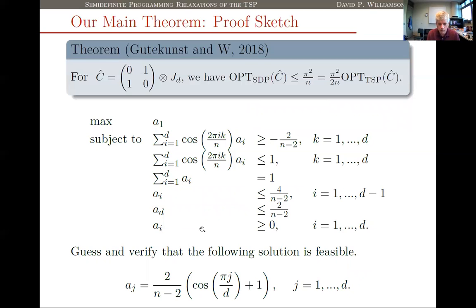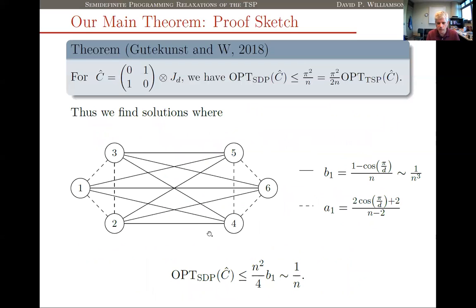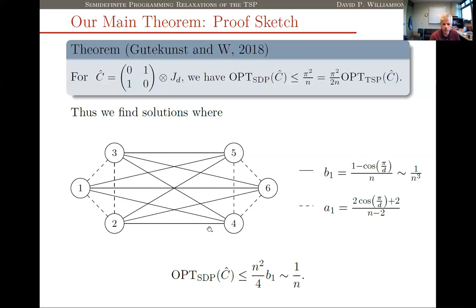Once you have those LP values, you find that a_1 equals a certain expression and b_1 equals (1 − cos(π/d)) / n, where d = ⌊n/2⌋, which is something like 1/n³. Recall we showed the SDP objective value is roughly (n²/4) · b_1. If b_1 is something like 1/n³, that gives us an SDP optimum value of something like 1/n. So what we've established is exactly what we set out to prove: the value of the SDP falls off like 1/n as n grows larger, while the value of the optimal tour is 2 — so there is no upper bound on the integrality ratio of the SDP.